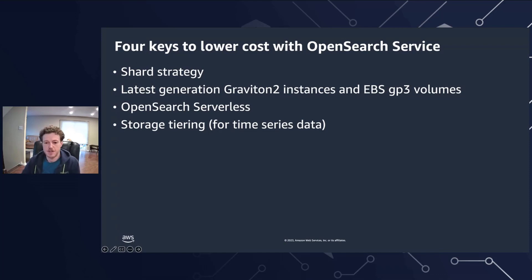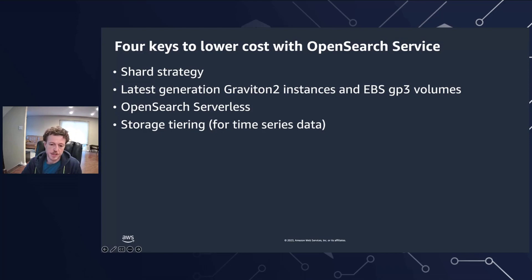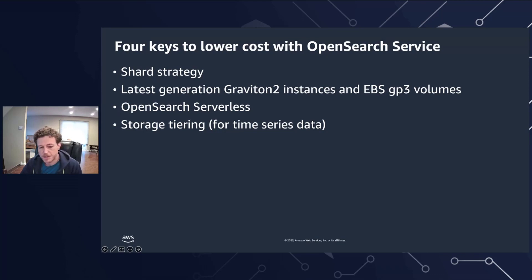Shard strategy is at the center of OpenSearch because properly configured indexes can help boost overall domain performance, while a misconfigured index can slow down or even disrupt domain operations. The latest generation Graviton2 instances and EBS GP3 volumes offer improved compute and storage performance at a reduced cost, and the OpenSearch Serverless offering provides pay-for-use pricing while eliminating the complexity of cluster scaling and shard strategy. Storage tiering for mitigating the costs of large data volumes of time series data is also important.